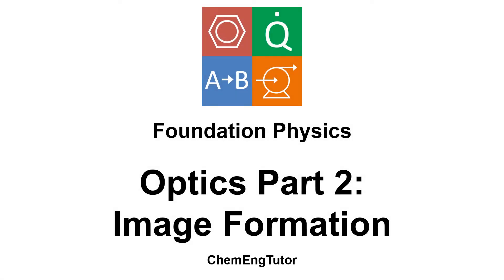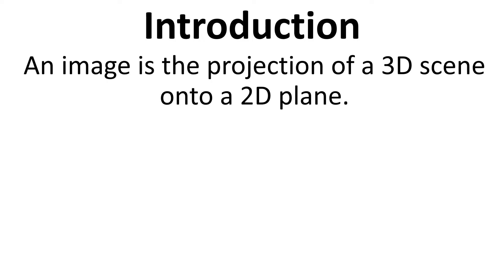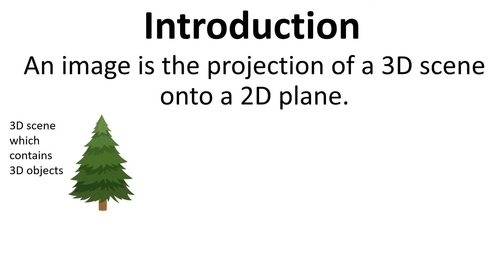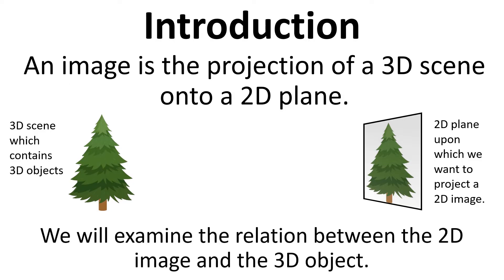In this video I'll be talking about image formation. By way of introduction, an image is the projection of a 3D scene onto a 2D plane. Here we have a 3D scene which contains a 3D object and then we have a 2D plane upon which we want to project a 2D image. We're going to examine the relationship between the 2D image and the 3D object.